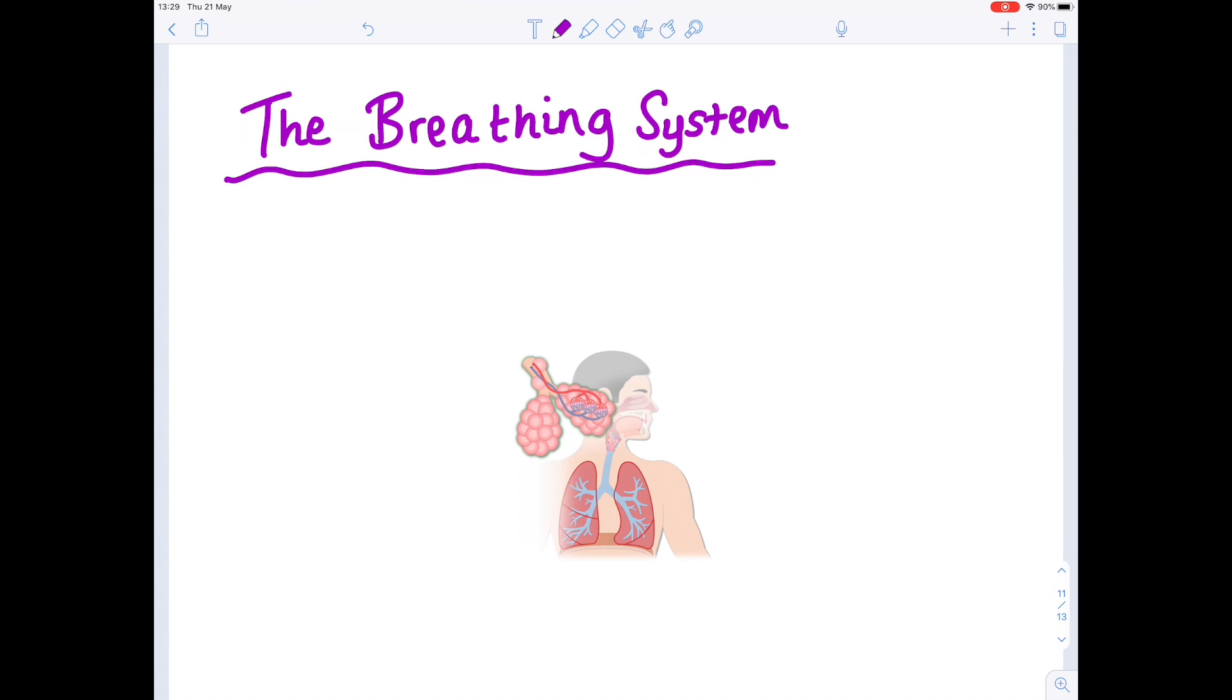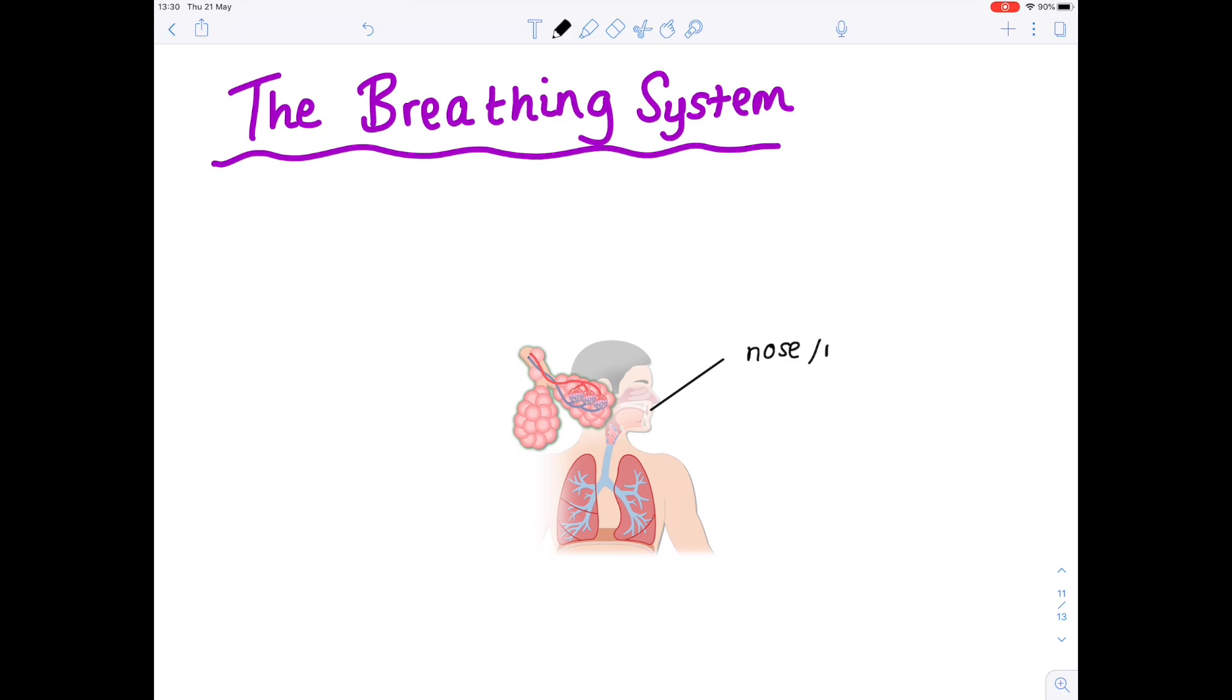So here we have a diagram. Notice that we breathe in either via our nose or our mouth. That air is taken down the windpipe, which, remember, its scientific name is the trachea, and that is reinforced with cartilage.